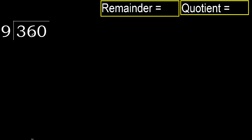360 divided by 9. 3 is less, therefore next. 36 is not less, therefore we work with 36. 9 multiplied by which number is nearest to 36 but not greater?